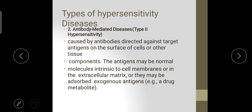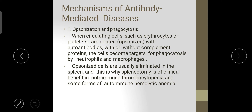The second type is antibody-mediated disease, caused by antibodies directed against target antigens on the surface of cells or other tissue. The antigen may be normal molecules intrinsic to cell membranes or in the extracellular matrix, or they may be exogenous antigens like drug metabolites. When circulating cells such as erythrocytes or platelets are coated with autoantibodies with or without complement protein, the cells become targets for phagocytosis by neutrophils and macrophages. These opsonized cells are usually eliminated in the spleen, which is why splenectomy is of clinical benefit in autoimmune thrombocytopenia and some forms of autoimmune hemolytic anemia.